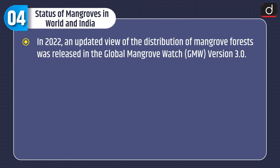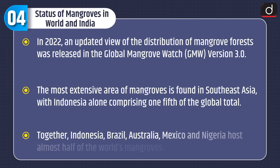Now moving on to the status of mangroves in world and India. In 2022, an updated view of the distribution of mangrove forest was released in the Global Mangrove Watch, i.e. GMW version 3.0. The most extensive area of mangroves is found in Southeast Asia, with Indonesia alone comprising one-fifth of the global total. Together, Indonesia, Brazil, Australia, Mexico, and Nigeria host almost half of the world's mangroves.